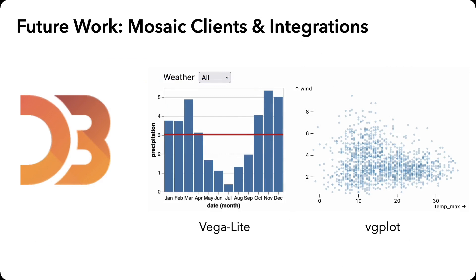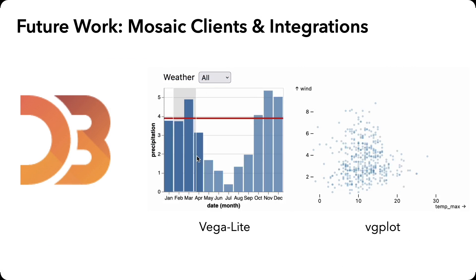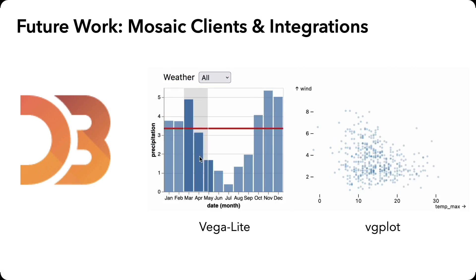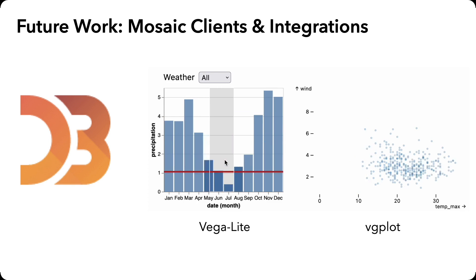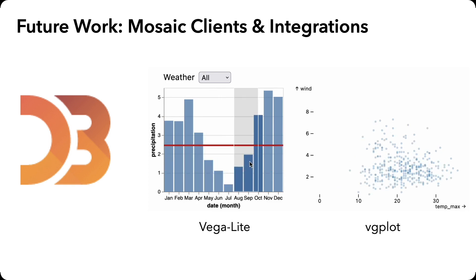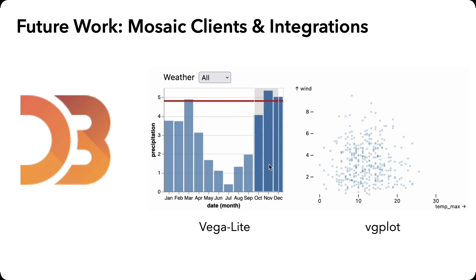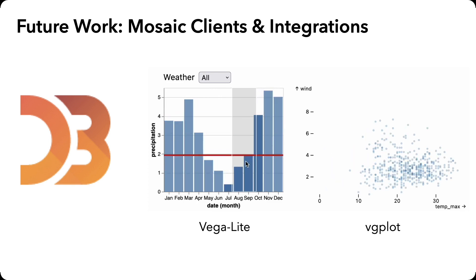While low-level libraries like D3 can be used directly to author Mosaic clients, important future work involves developing new tools and integrations. This proof-of-concept example shows Mosaic-mediated linking between Vega-Lite and VGplot views.